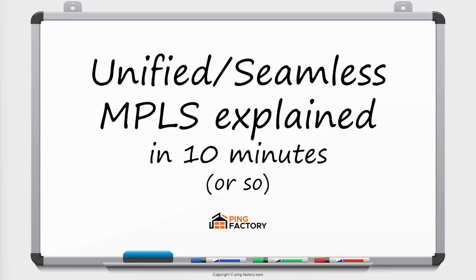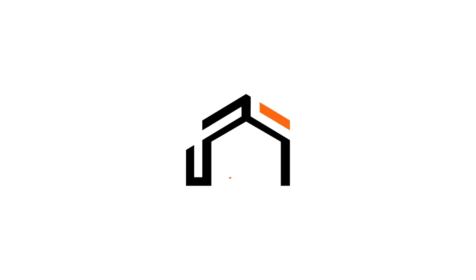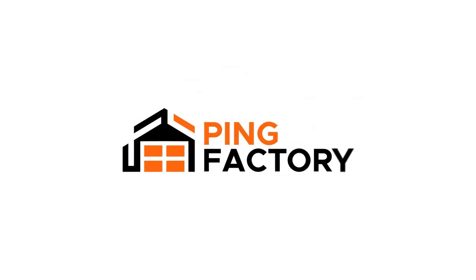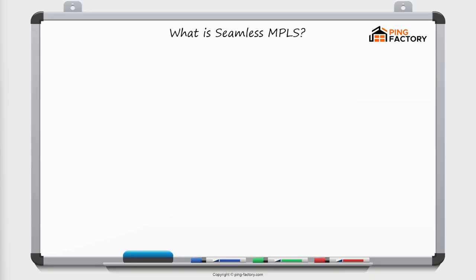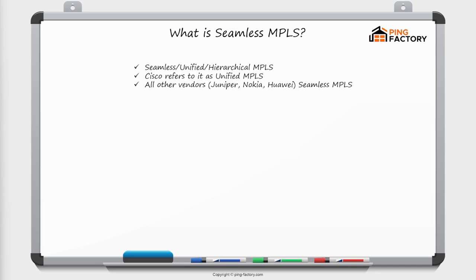In this video I'm going to show you why we need seamless MPLS and then explain how it works. Let's start by answering: what is seamless MPLS? You may have seen different names for it — it's called seamless, unified, or hierarchical MPLS. Cisco usually refers to it as unified MPLS in its documentation, but all other vendors — Juniper, Nokia, Huawei — call it seamless MPLS.